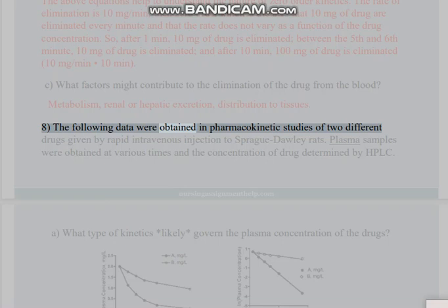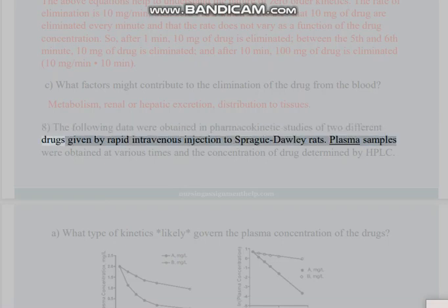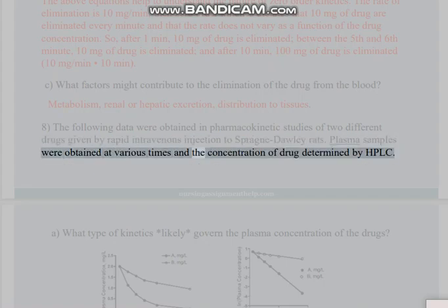Problem 8: The following data were obtained in pharmacokinetic studies of two different drugs given by rapid intravenous injection to Sprague-Dawley rats. Plasma samples were obtained at various times and the concentration of drug determined by HPLC.